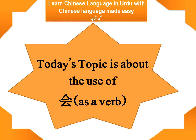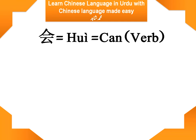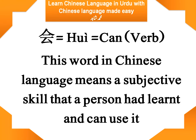So let's proceed and get to know. When we use 会, it means 'can.' When we use 会 as a verb meaning 'can,' it refers to a subjective skill that a person possesses. When we talk about that skill, we put 会 in front of that skill to describe that a person has it or does not have it.